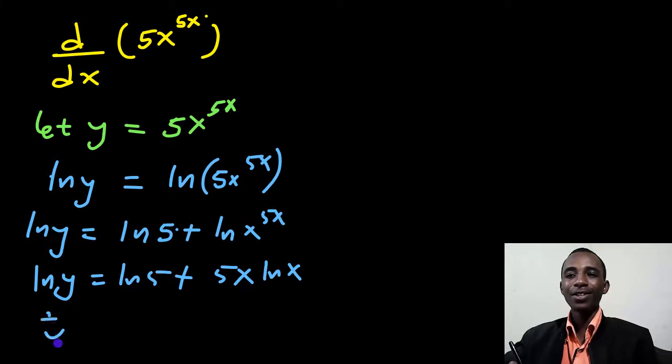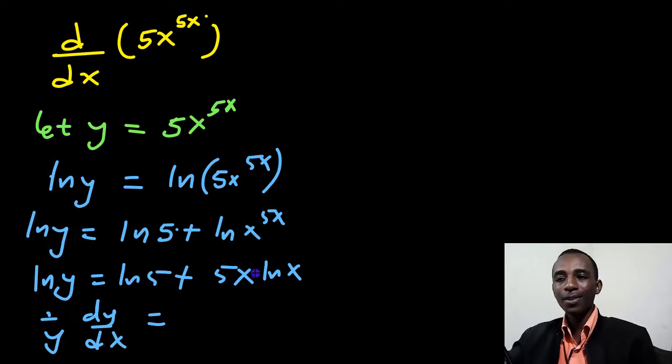So let's take derivatives. 1 over y, dy/dx equals the derivative of natural log of 5 is a 0. So 5x natural log of x. So let's use product rule here.